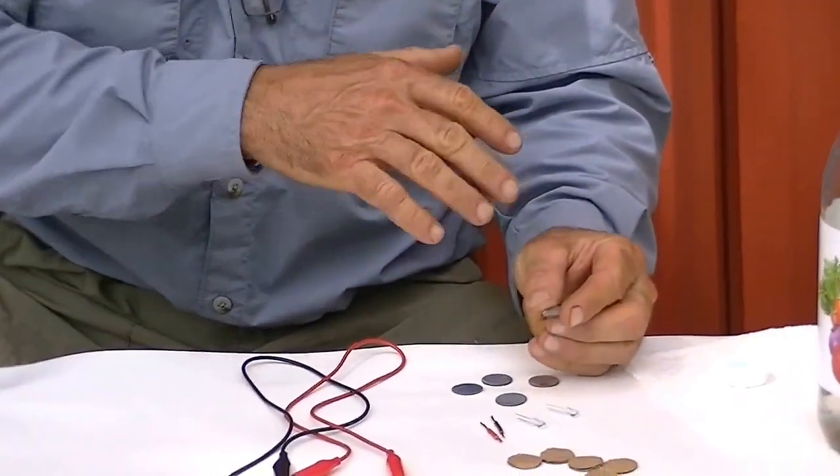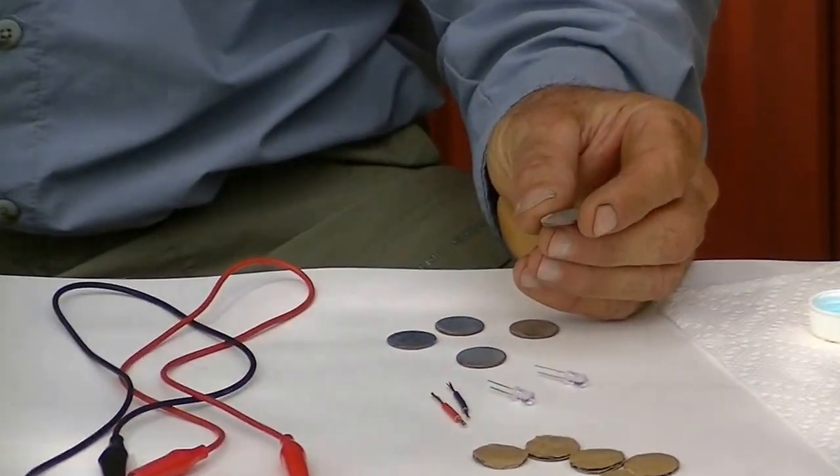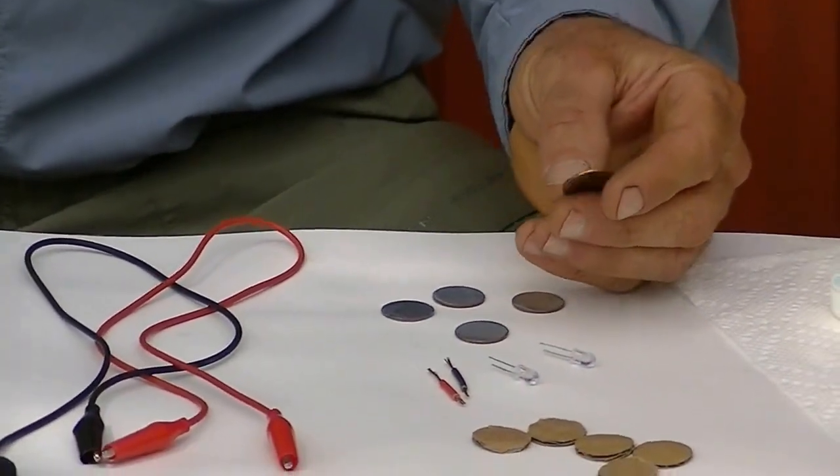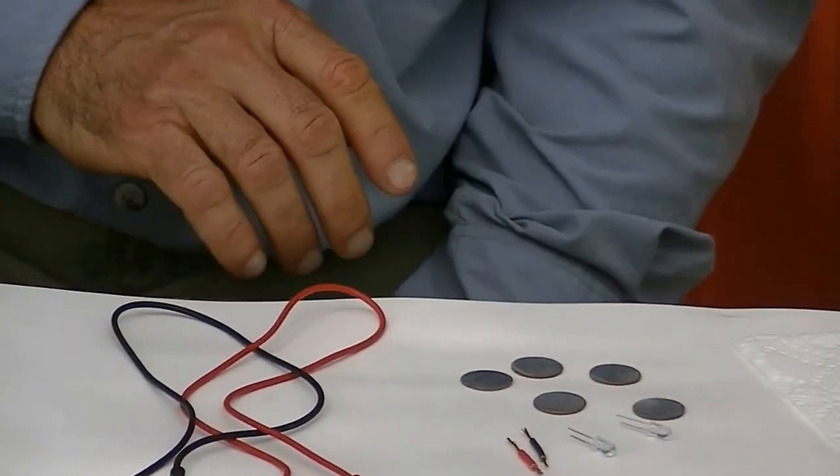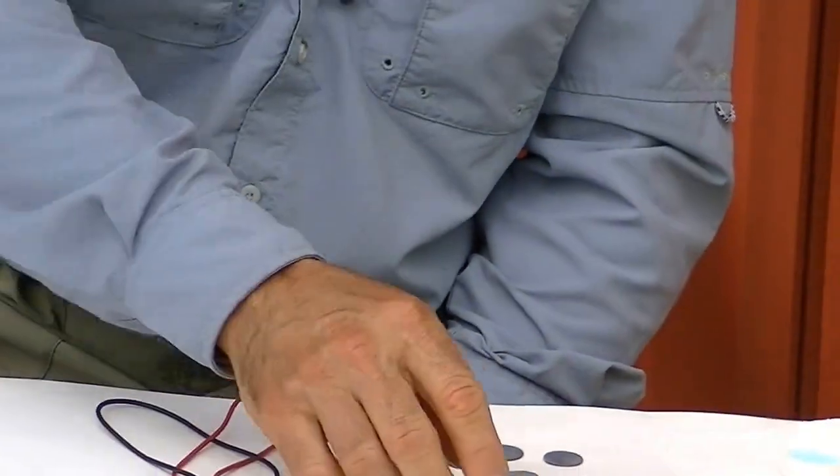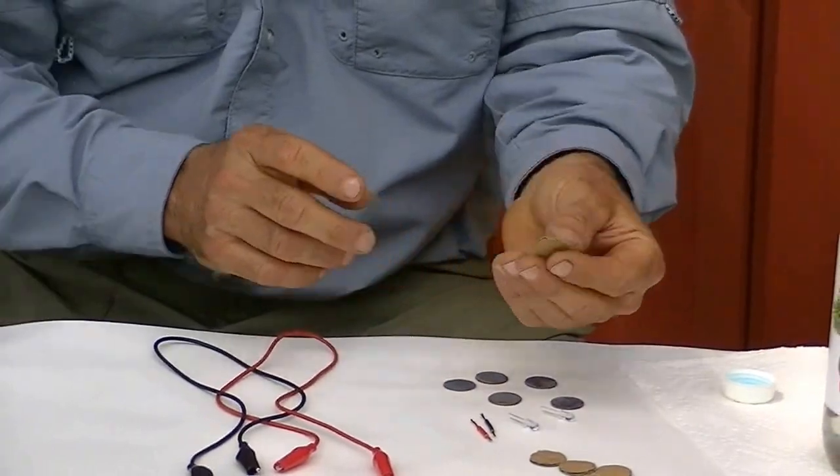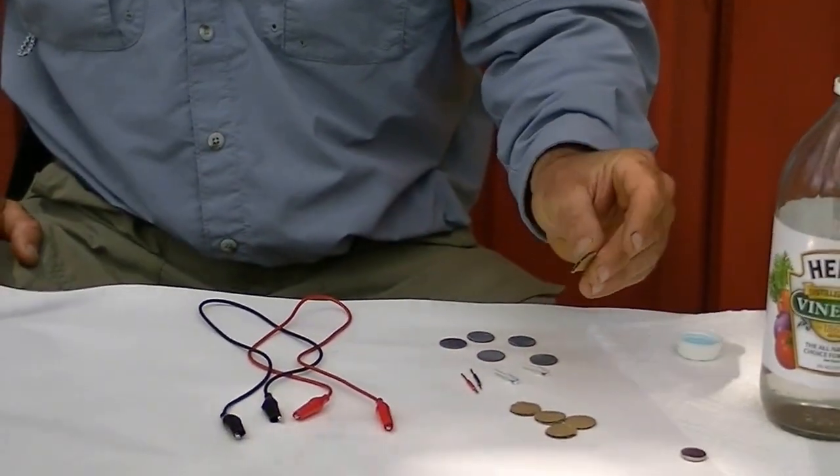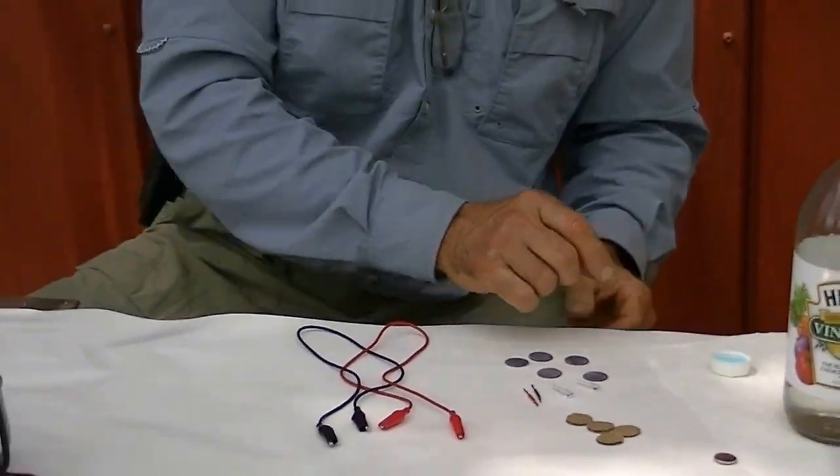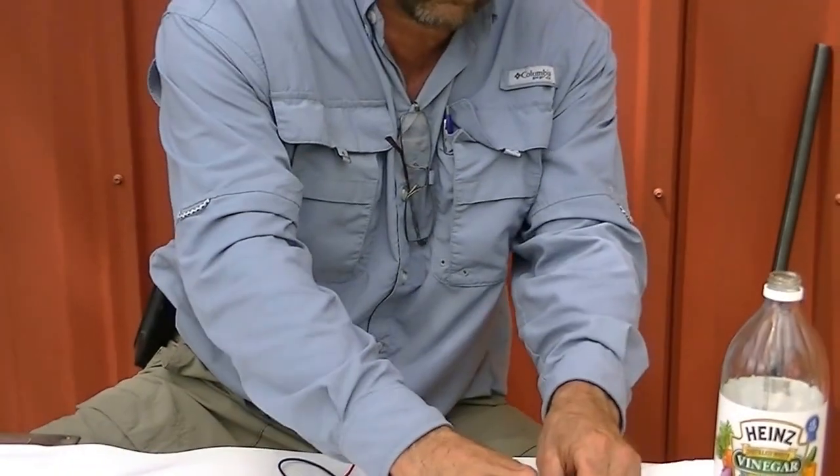Old pennies were made out of mainly copper, the newer pennies is mainly zinc. So we're going to use five pennies and some cardboard and some vinegar. I cut the cardboard out with a hole punch, three-quarter inch hole punch, and I'm just simply going to soak it in vinegar.